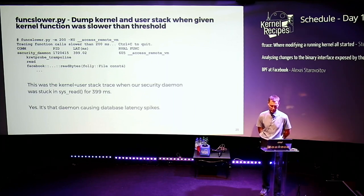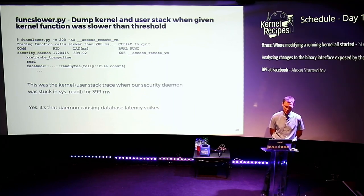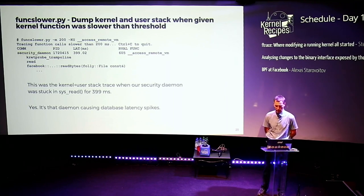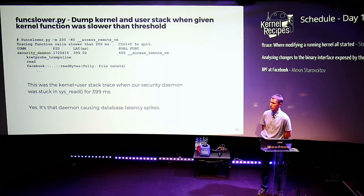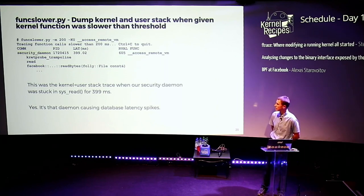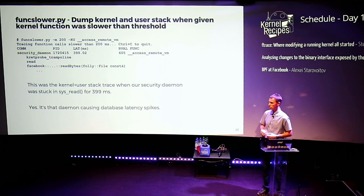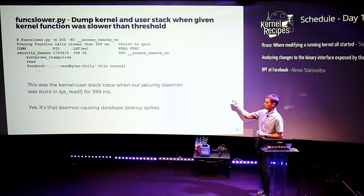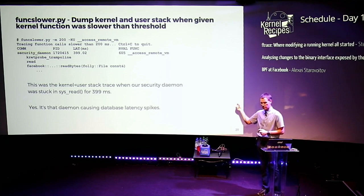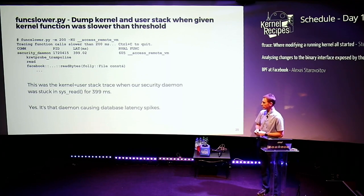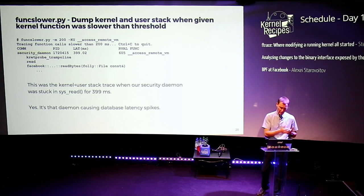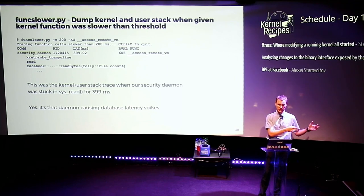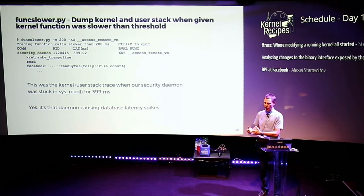Now that we knew something was wrong, we ran another BPF-based tool called func_slower. We asked it to print kernel and user space stack traces for AccessRemoteVM when the total runtime of that function was more than 200 microseconds. The information showed that indeed it was our security daemon that was blocked for — in this case — 399 milliseconds. This confirmed that this particular daemon was causing the latency spike, matching the observations of the database team and the kernel team.